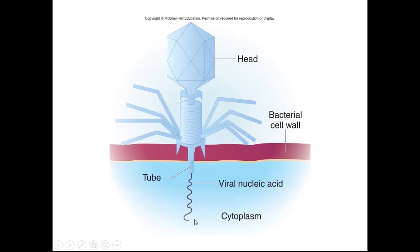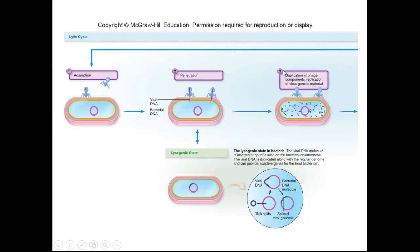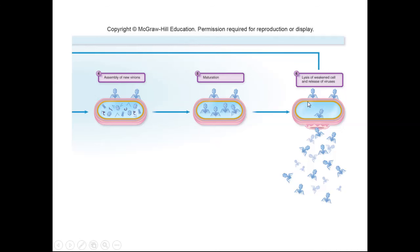The stages of bacteriophage reproduction are: stage 1, absorption; stage 2, penetration; stage 3, duplication of the components; stage 4, assembly of new components; stage 5, maturation where new components are fully assembled; and stage 6, the cell will lyse and release new bacteriophages into the extracellular environment. Then the process repeats itself.